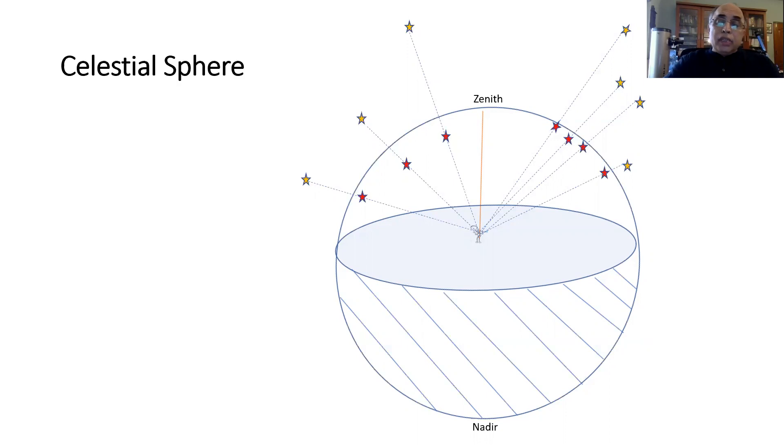There are ways of determining distances to the stars or celestial objects which we shall be seeing as we proceed ahead. But for now we will be concerned with positions on the surface of the celestial sphere.